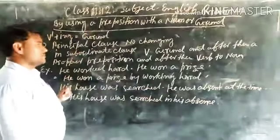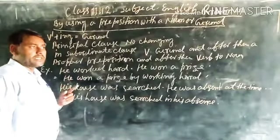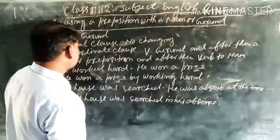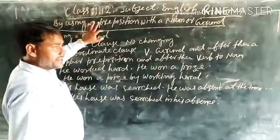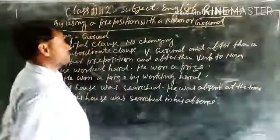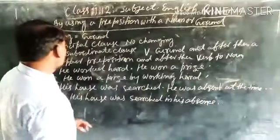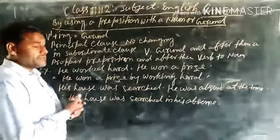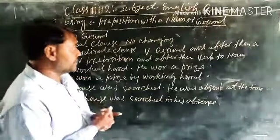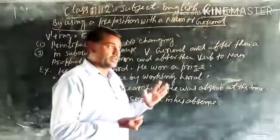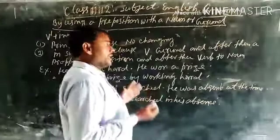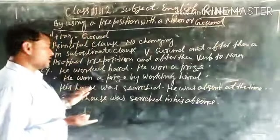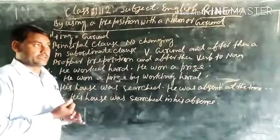What is a gerund? In a verb's first form, add '-ing' to make a gerund. So, in this way, by using a preposition with a noun or a gerund, we have to combine two or more simple sentences into one simple sentence.